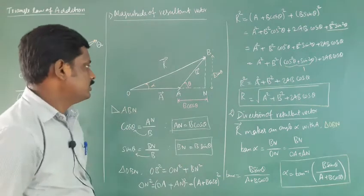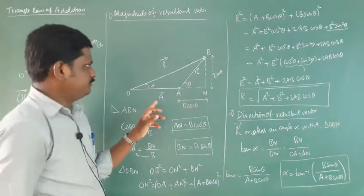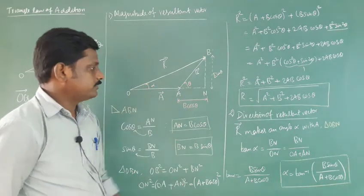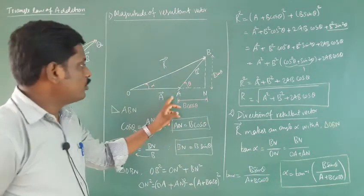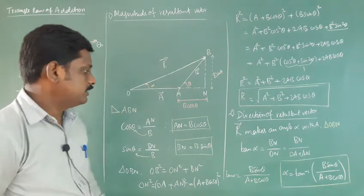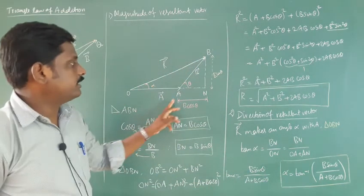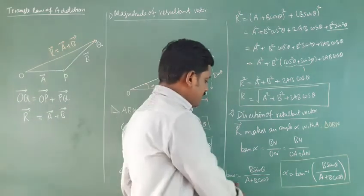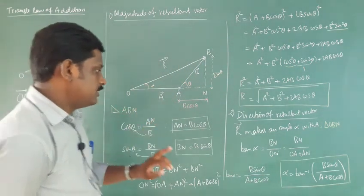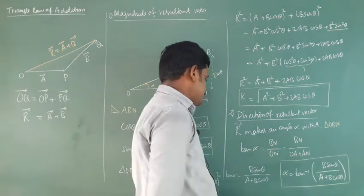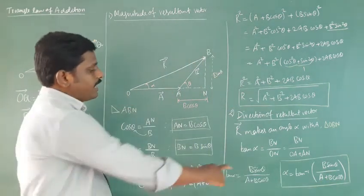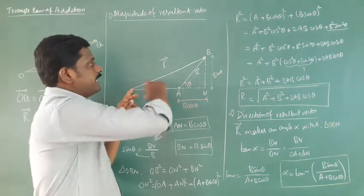In triangle OBN, tan alpha equals opposite over adjacent, which is BN over ON. Since ON equals OA plus AN, and BN equals B sin theta, OA equals A, and AN equals B cos theta, we get tan alpha equals B sin theta over A plus B cos theta. Therefore alpha equals tan inverse of B sin theta over A plus B cos theta. This gives us the direction of the resultant vector.